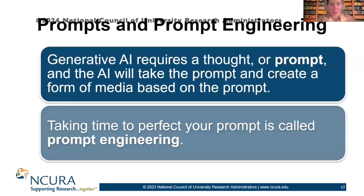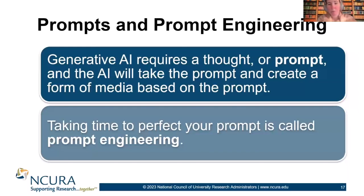Basically, a prompt is just a thought. You provide the AI with a thought and it will take that prompt and create a form of media based on it. You should tell it what form of media you want, or you pick the AI tool that makes that form of media. For images, we have MidJourney — MidJourney only does images. If you were interested in text, you would pick a tool like Bing Chat or ChatGPT.